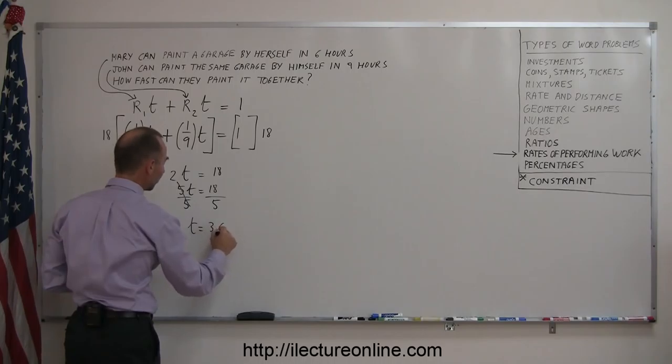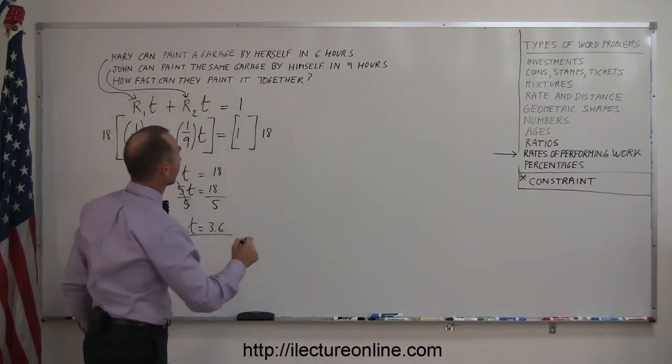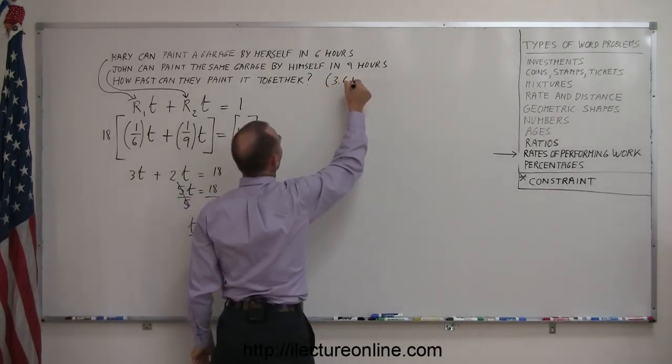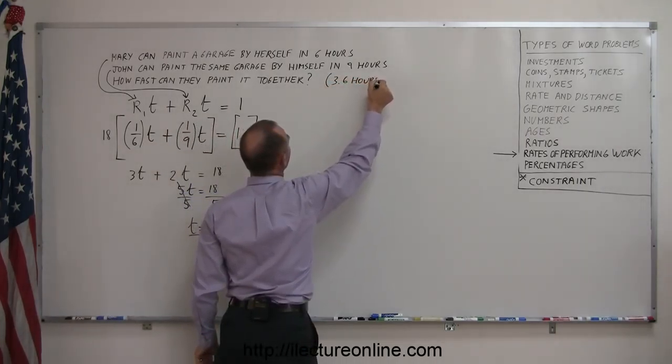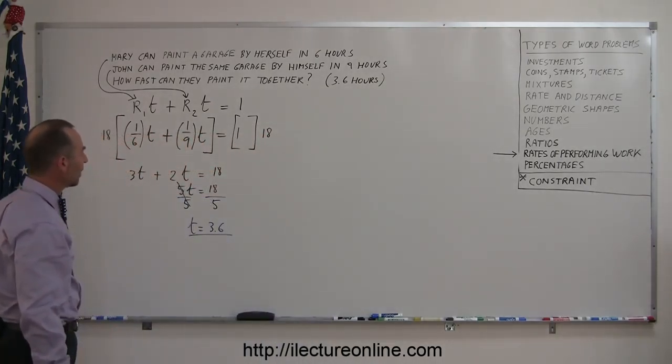Which is three point six, which means that when they work together, they can do the job in three point six hours. So you can see, if you do it like this, it's not too bad.